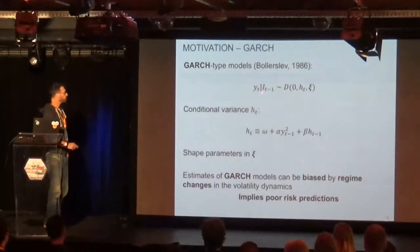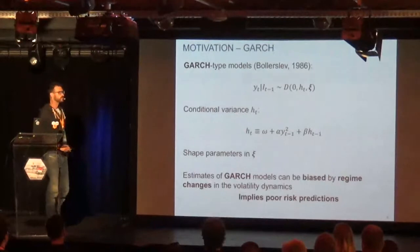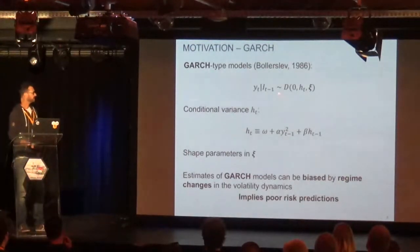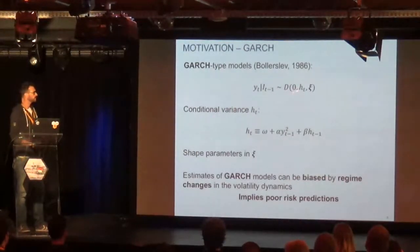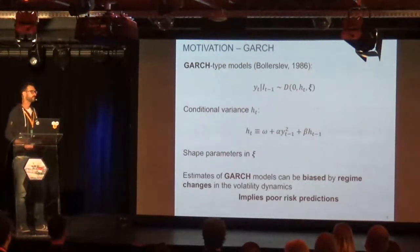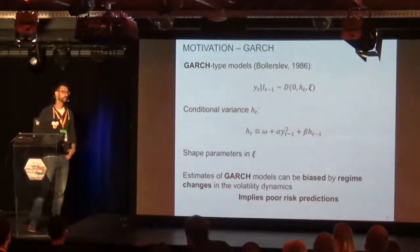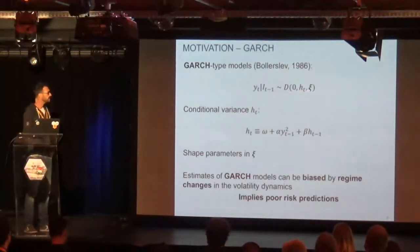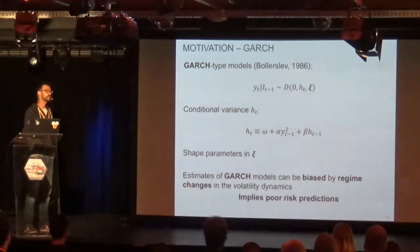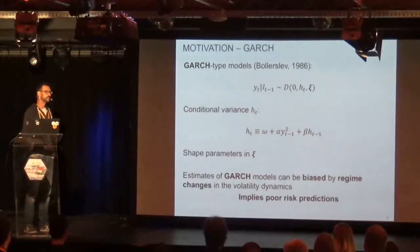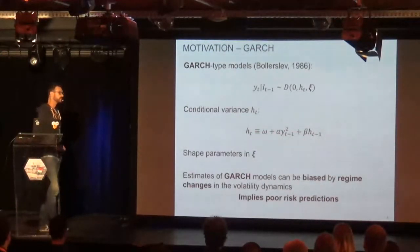To introduce the notation: Yt is the log return at time t, and I_{t-1} is the information set at time t minus one. We model that through a distribution with zero mean, a conditional variance which depends on time, and a set of parameters for skewness and kurtosis. What's key in this specification is HT — that's how the conditional variance evolves. The GARCH model specifies it through a linear model.